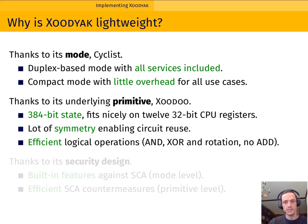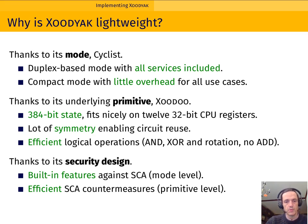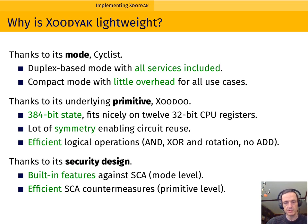Another advantage of Zodiac in lightweight comes from the security design. Even though Zodiac targets lightweight applications, it provides a security level of 128 bits, and we think it doesn't make sense to target that security level without also taking into account side-channel attacks. Zodiac allows for very efficient side-channel countermeasures thanks to the Zoodoo primitive, and the mode also includes several features that strengthen it against side-channel attacks. For instance, the secret key is constantly updated, making it a moving target and hence much more difficult to extract via a side channel.